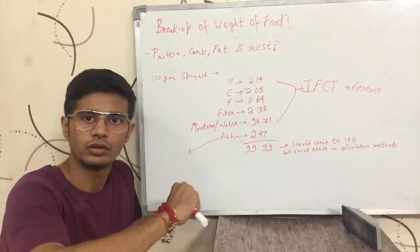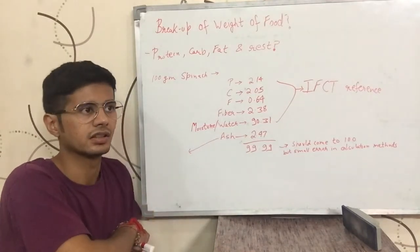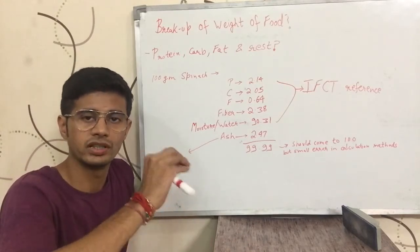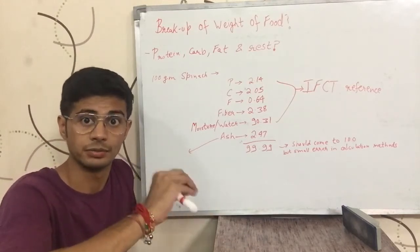In protein, carbohydrates and fat, there are only 20 grams accounted for. So what is the rest? What is outside of protein, carbohydrates and fat? First of all, let me explain.